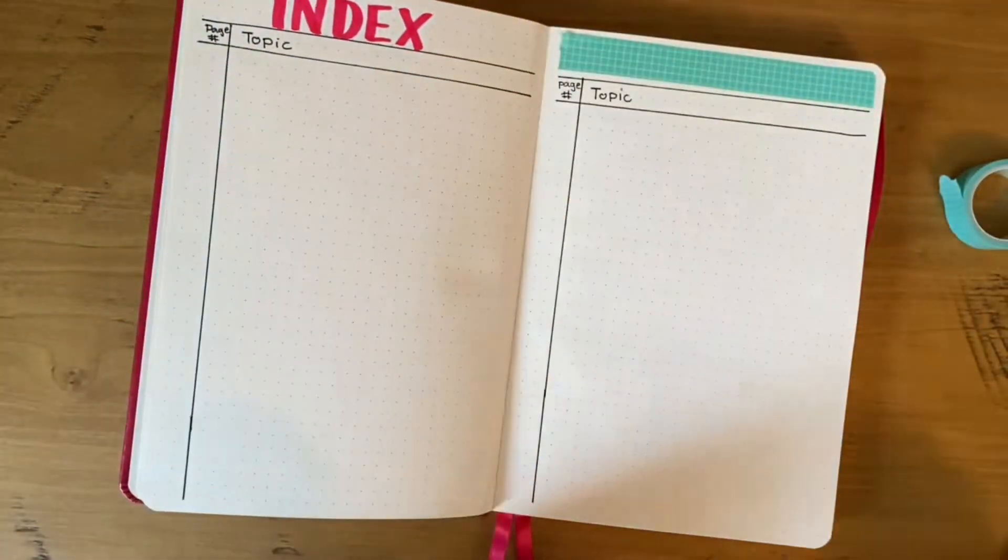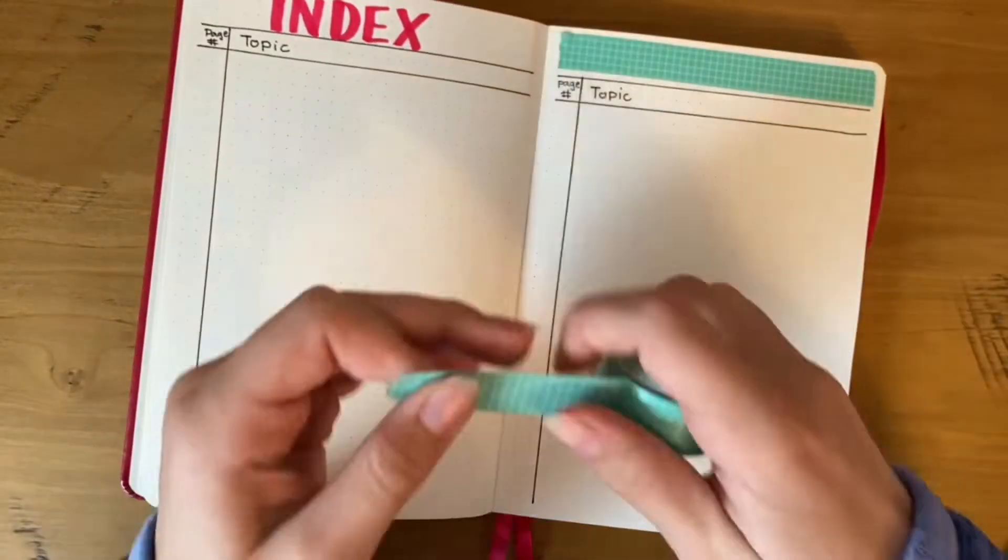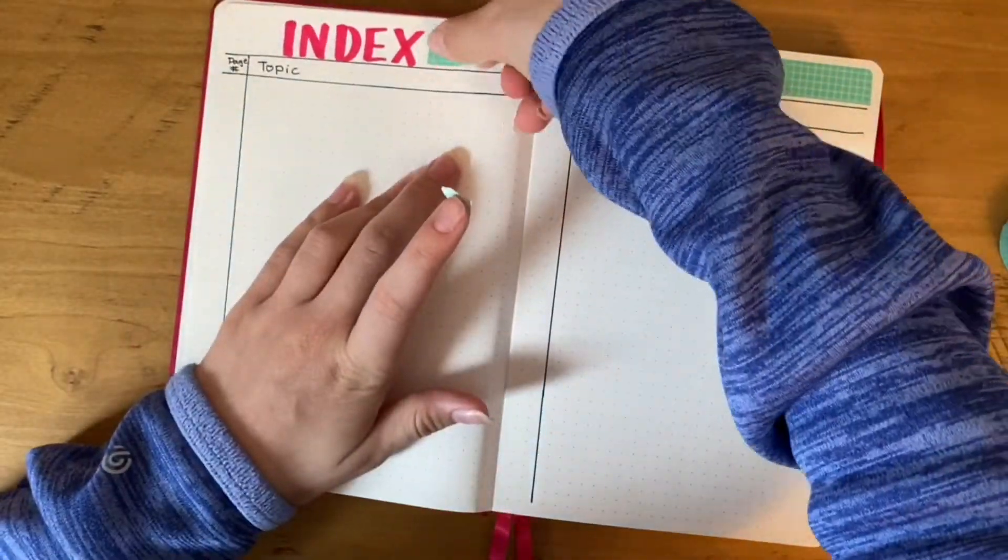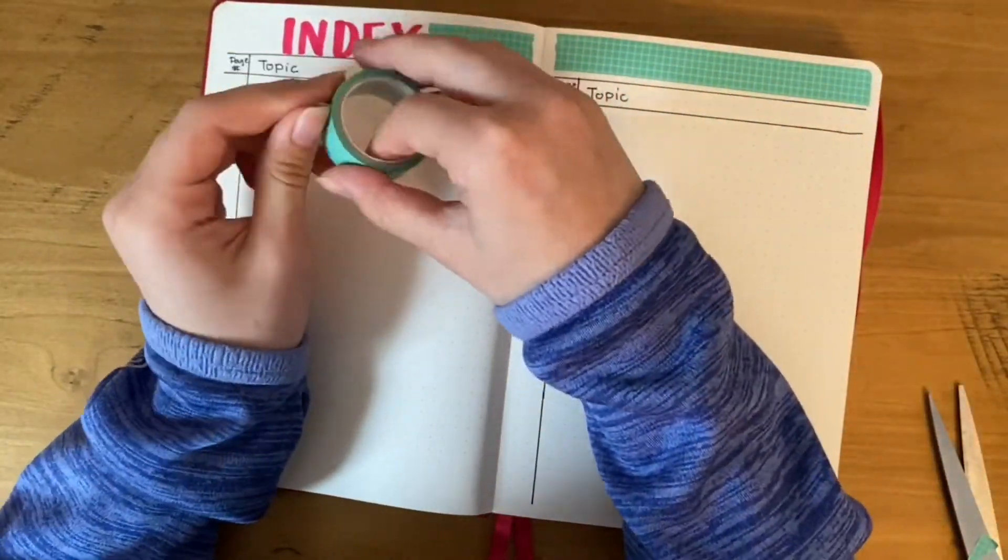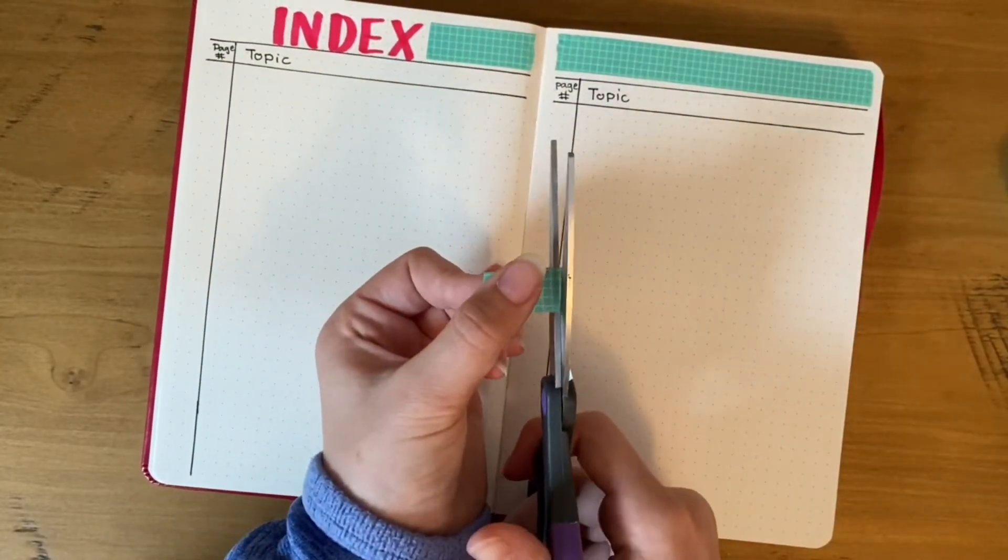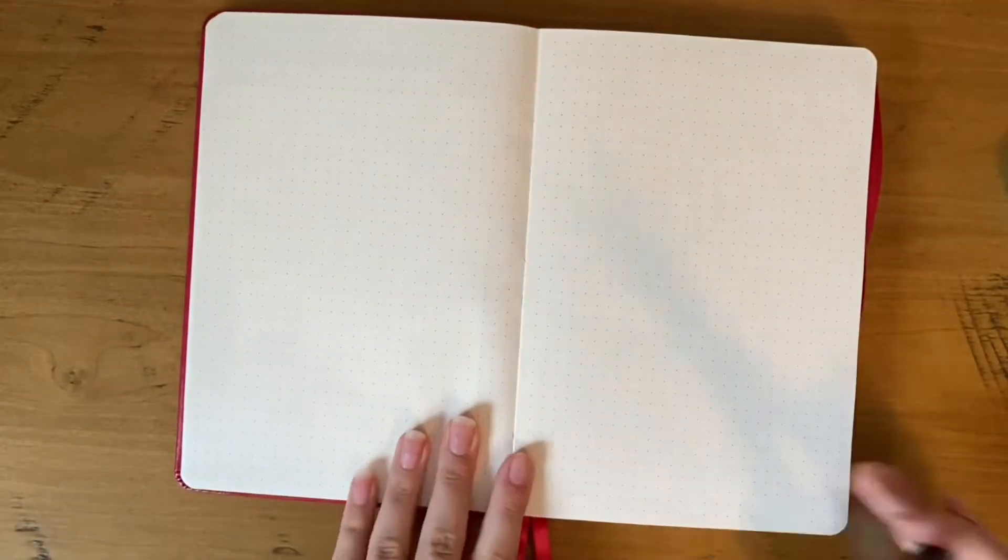I didn't number the pages during setup—there are no numbers on these pages, which is fine with me. I did that after the video because nobody wants to see somebody just writing numbers for 20 bajillion minutes. Then I finished off this index with some washi tape because it looked a little plain.